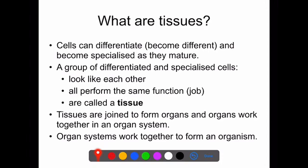When you have a group of differentiated and specialized cells, if they look like each other and they perform the same function as each other, then we call them a tissue because they're working together.